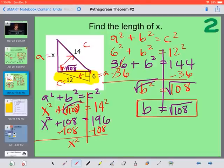Solving this should be a review from the previous day. So 196 minus 108 gives us 88. And then last, to get rid of the square, take the square root.